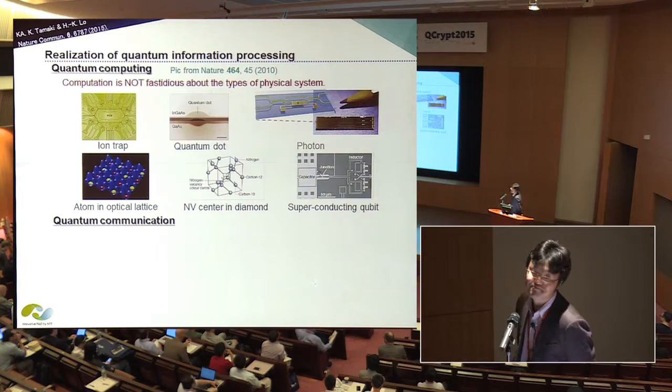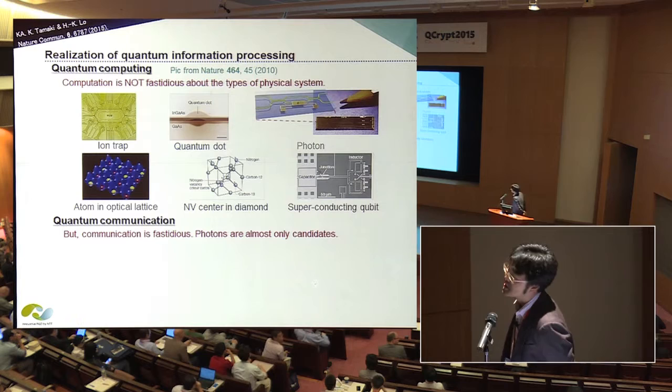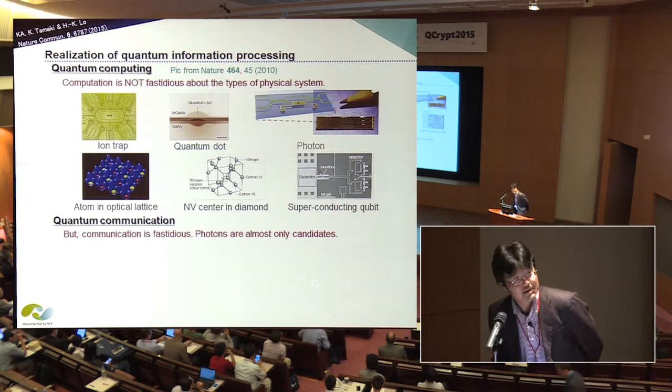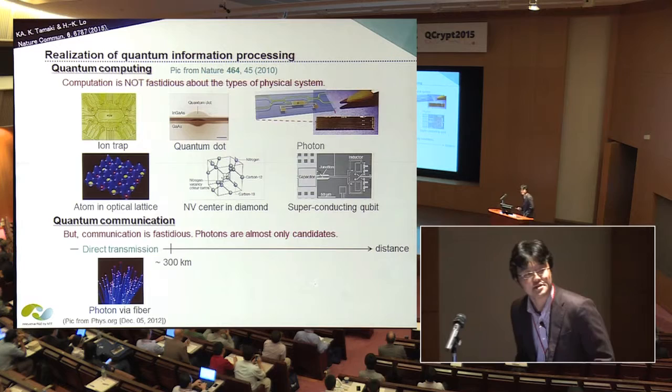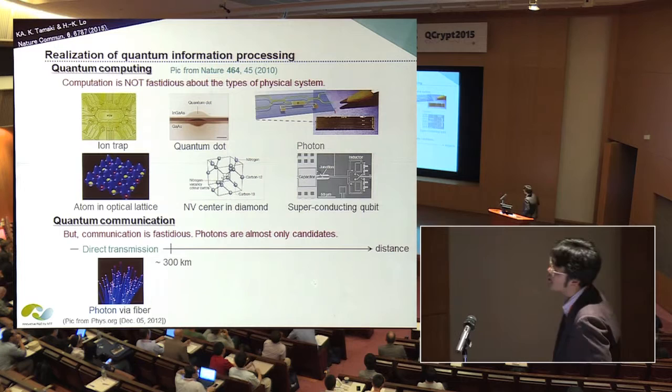On the other hand, quantum communication is completely different. In order to perform the communication, photons should be special. Even in the far future, photons should play the central role in the implementation of quantum communication. In fact, we have already achieved quantum communication up to 300 kilometers by using the direct transmission of single photons over optical fibers. This is good news. However, this type of method has a limitation on the achievable distance, which is close to 300 kilometers.